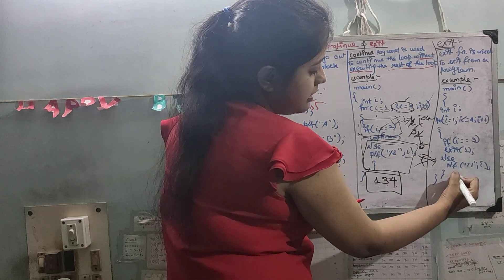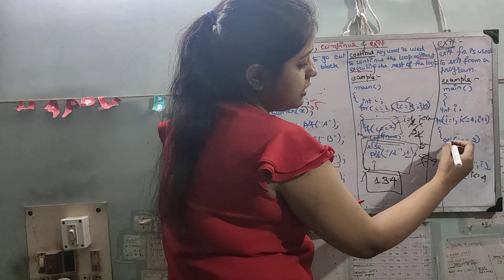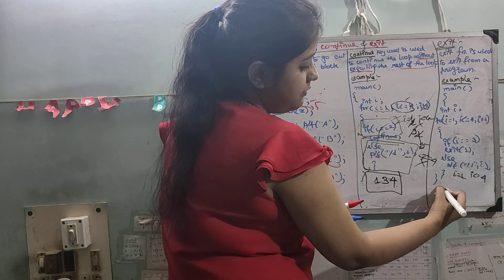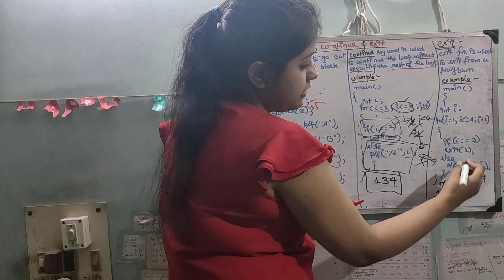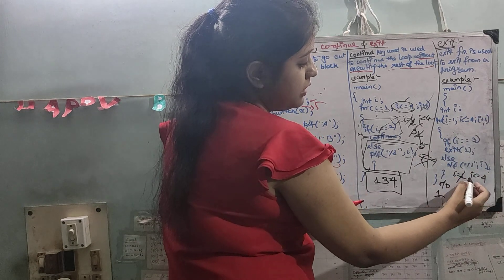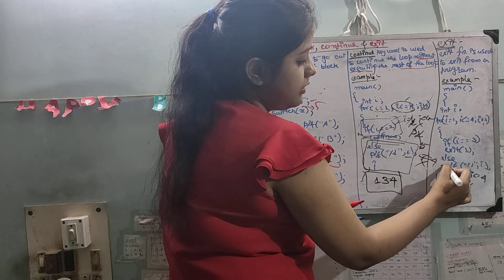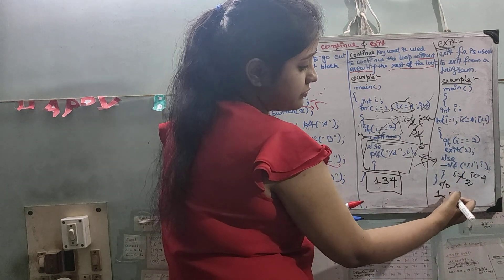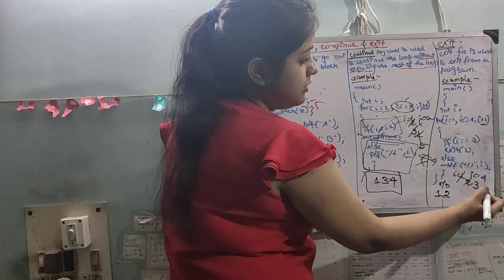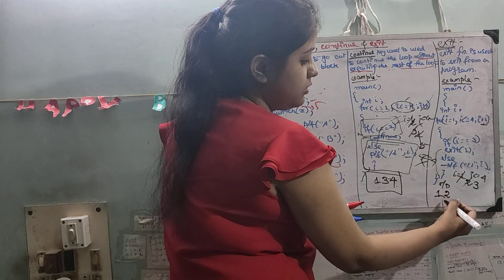Else printf i. So i equals to 1, i less than equals to 4 — yes. If i equals to 3 — no. Then else, printf — 1 is printed. Then i plus plus, 1 incremented to 2. 2 is not equal to 3, then printf — 2 is printed. Then i plus plus, i becomes 3. 3 equals to 3 — yes. Then exit — exit from the loop.